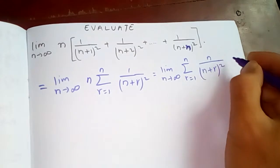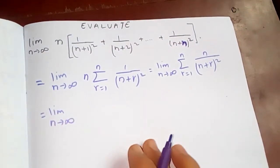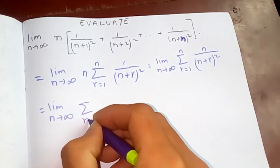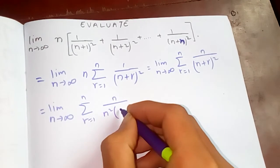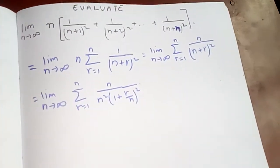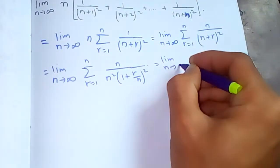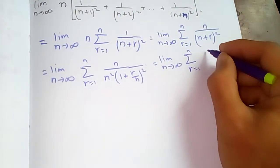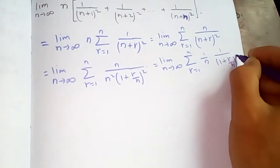We have n plus r, whole square. This is the limit as n tends to infinity, sum of r equals one to n. Now taking out n squared common, you'll get one plus r over n, whole square. Simplifying, the limit as n tends to infinity, sum from r equals one to n, gives one over n times one over (one plus r over n) squared.